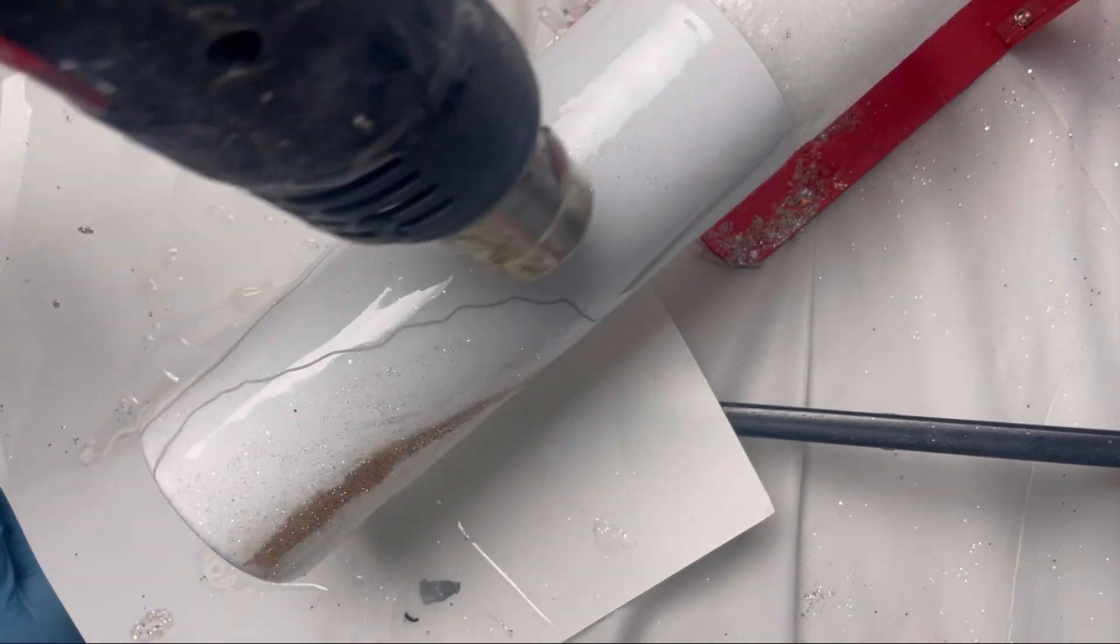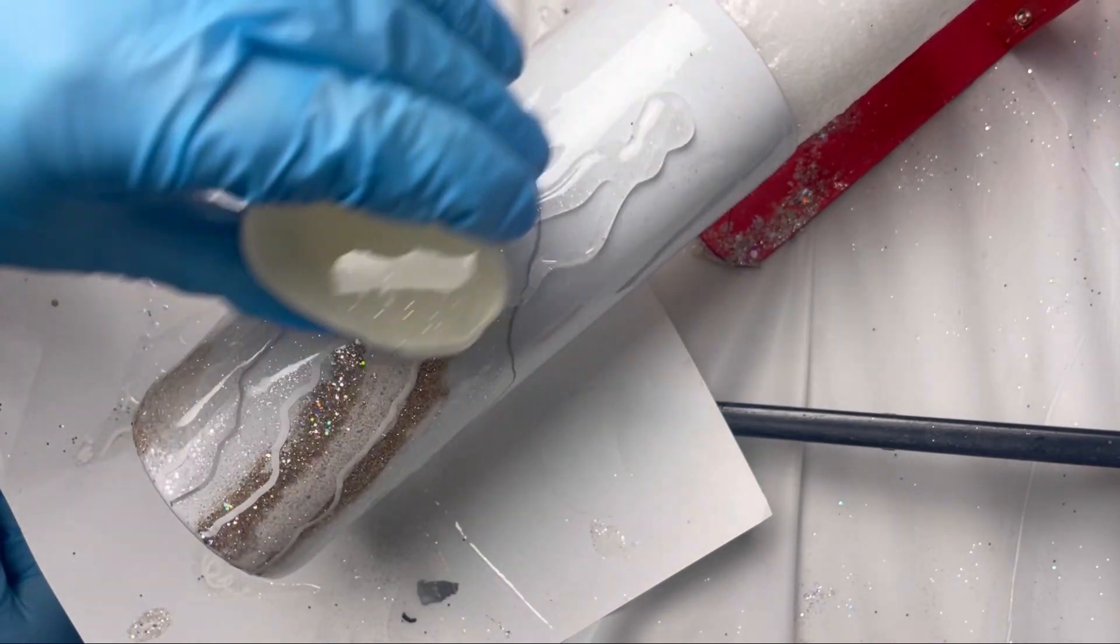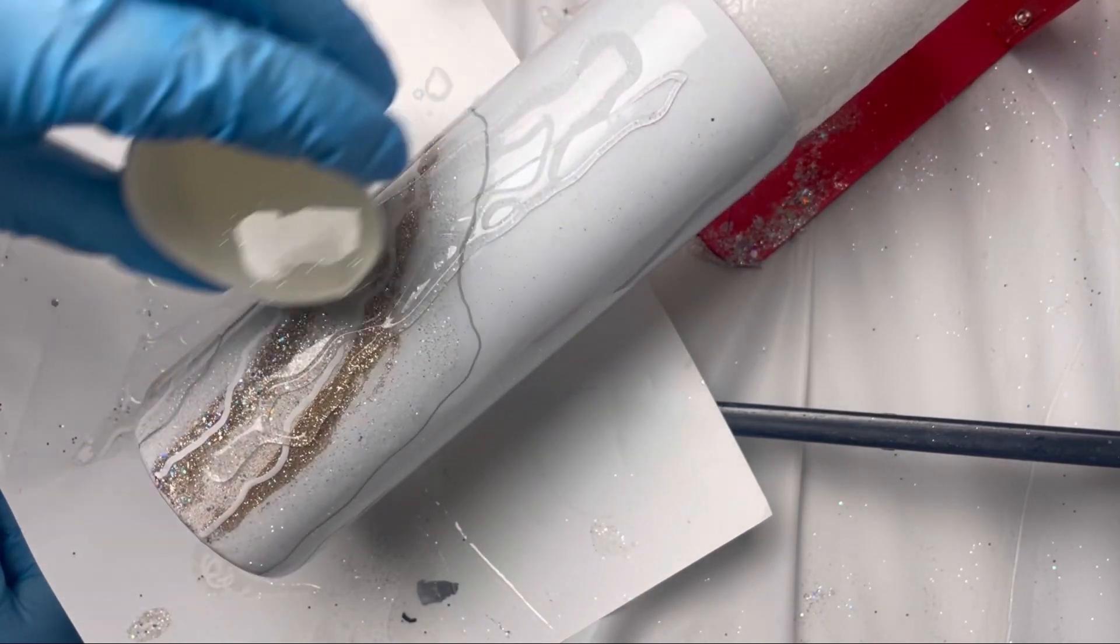So now my tip for the final resin application because we want it to be perfect: heat the tumbler up a little bit with your heat gun and then apply the resin.